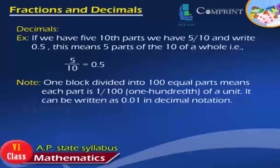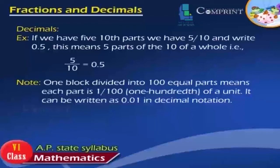Example: if we have 5 tenths parts, we have 5 by 10, and we write 0.5. This means 5 parts of the 10th of a whole — that is, 5 by 10 is equal to 0.5. Note: one block divided into 100 equal parts means each part is 1 by 100th of a unit. It can be written as 0.01 in decimal notation.